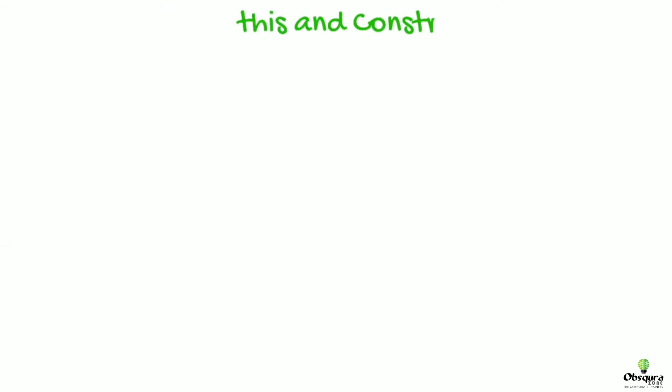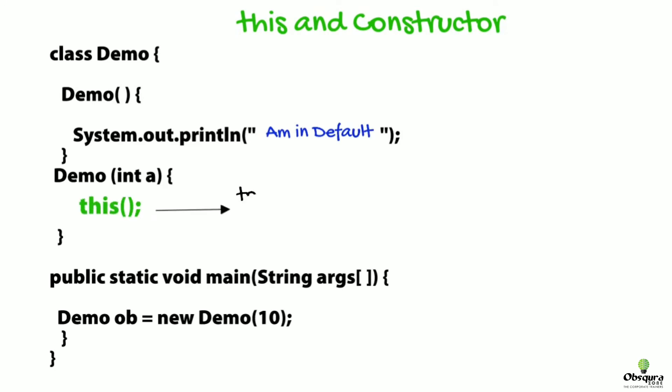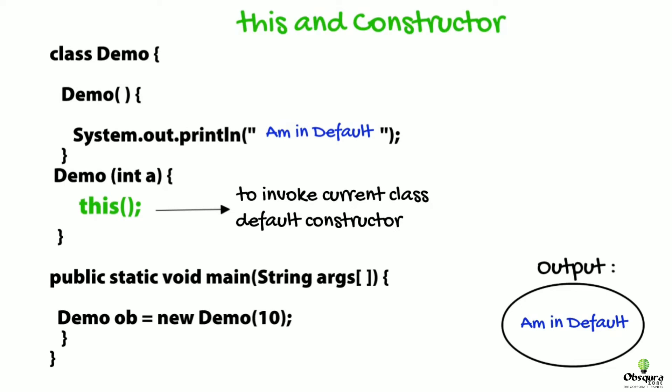The this constructor call can be used to invoke the current class constructor. In other words, it is used for constructor chaining.